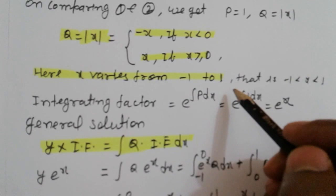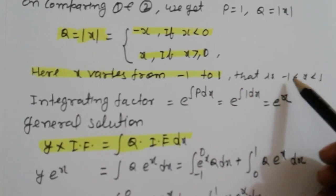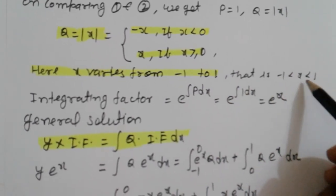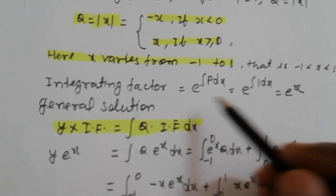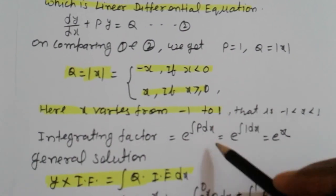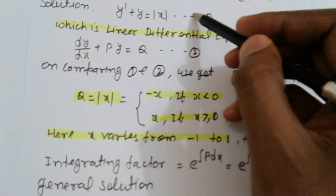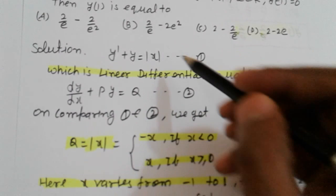Here X varies from minus 1 to 1, so minus 1 less than or equal to X less than or equal to 1. Now integrating factor: integrating factor is e raised to integral P dx, so integrating factor is e raised to x.